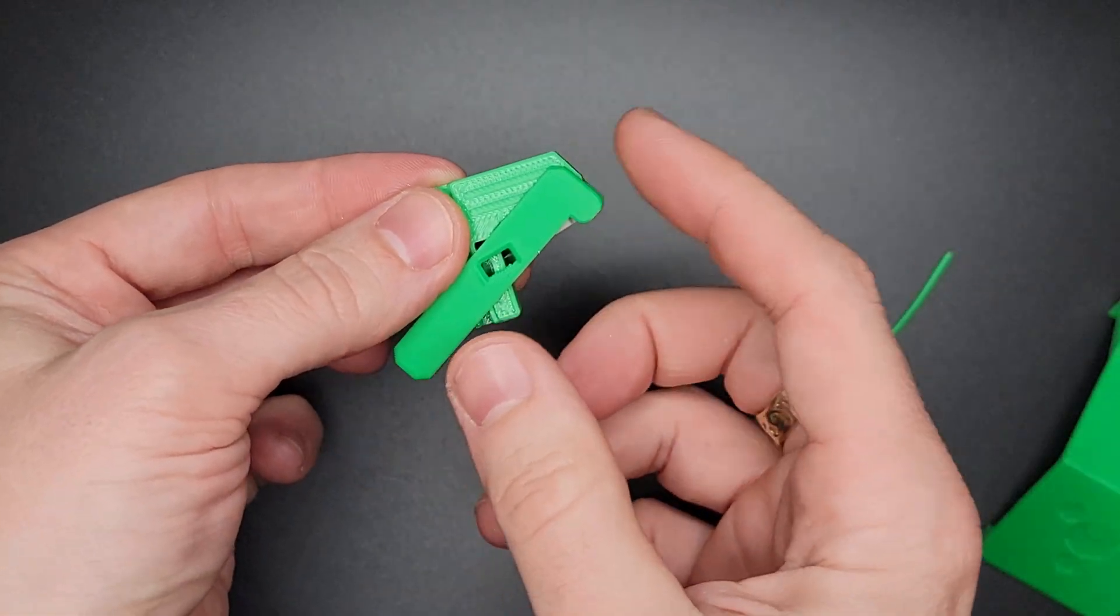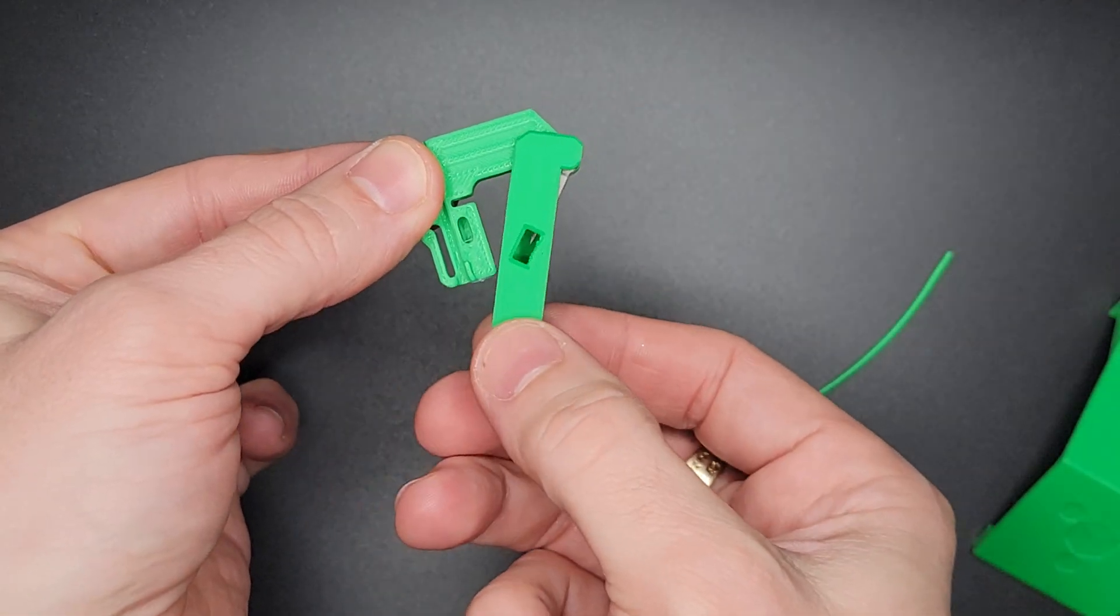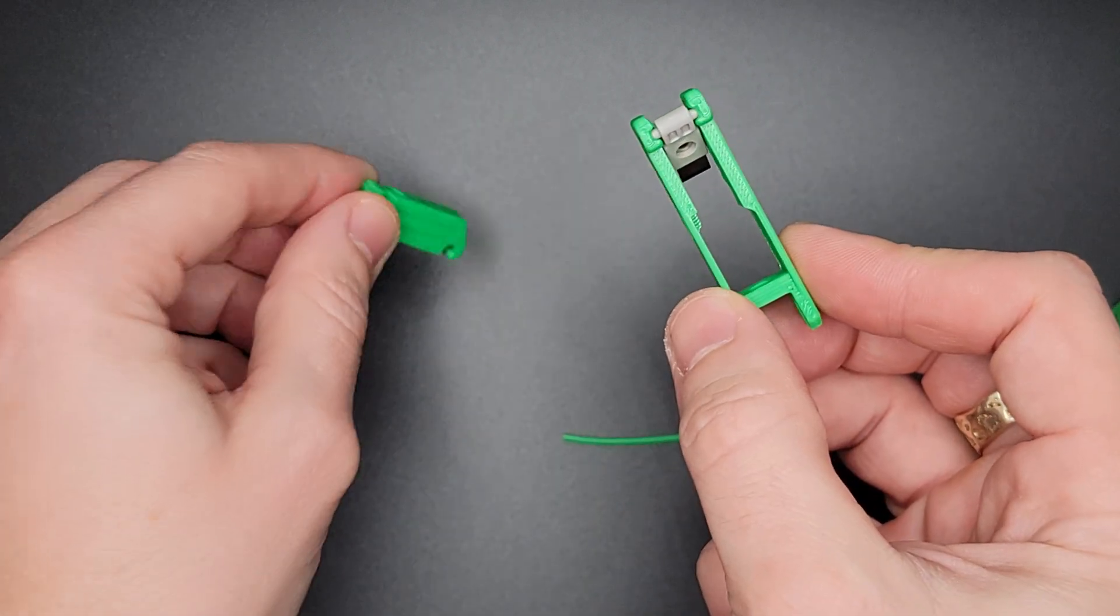To remove the arm from the slide, just rotate it this way and keep going and it pops off.